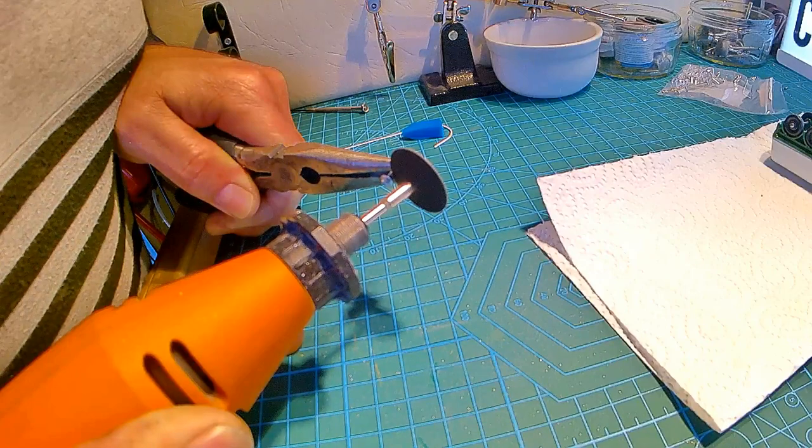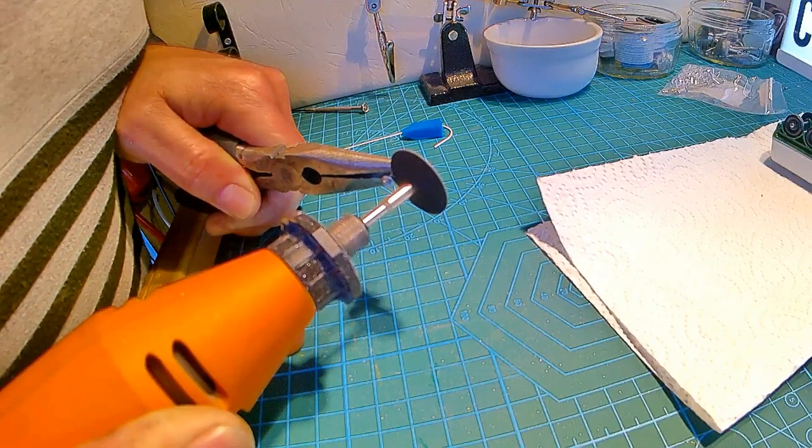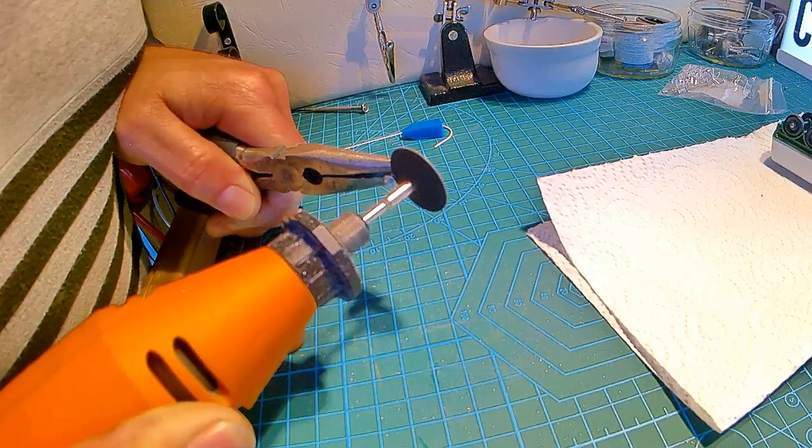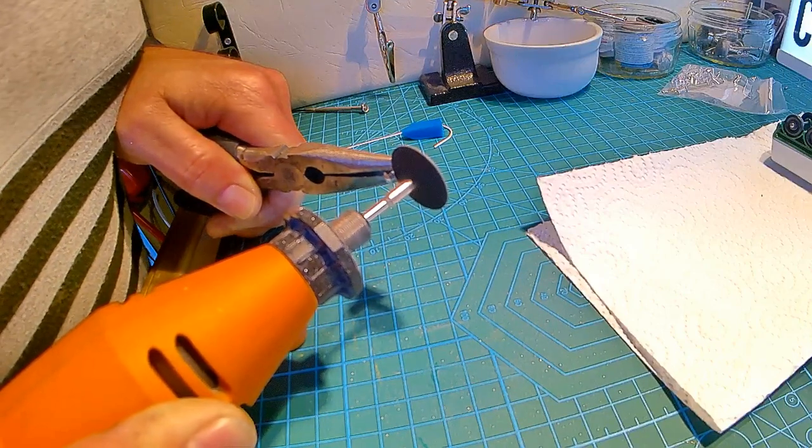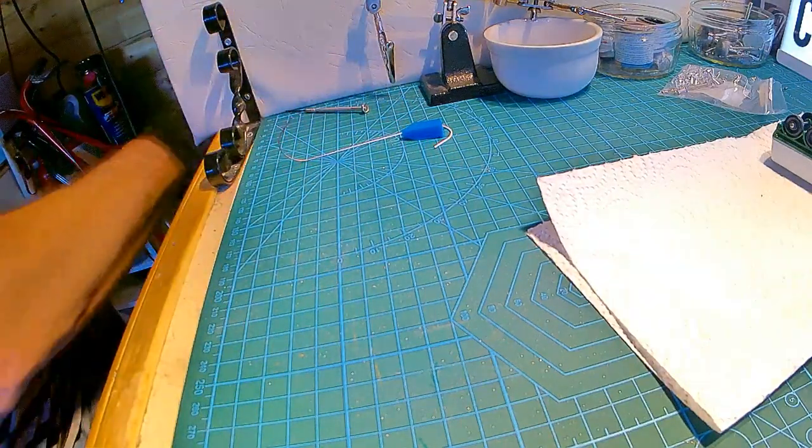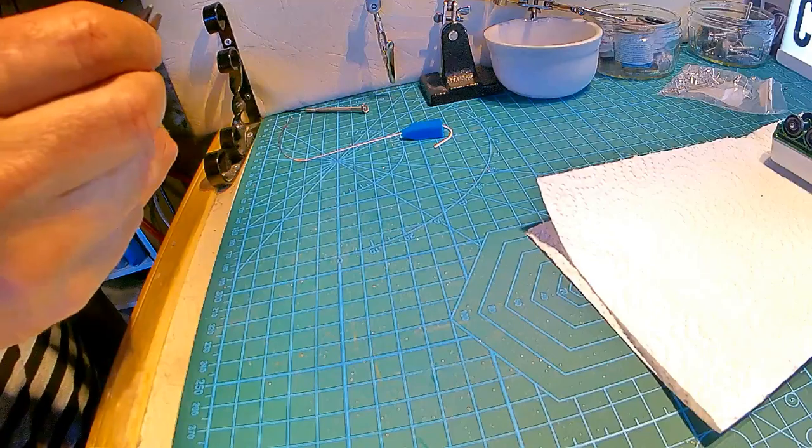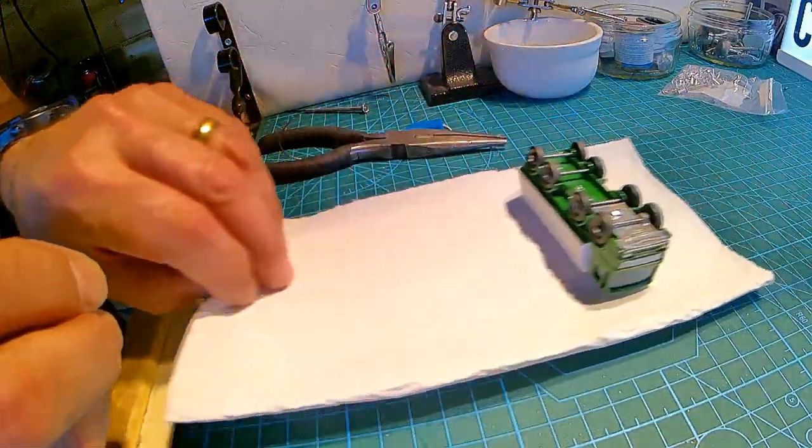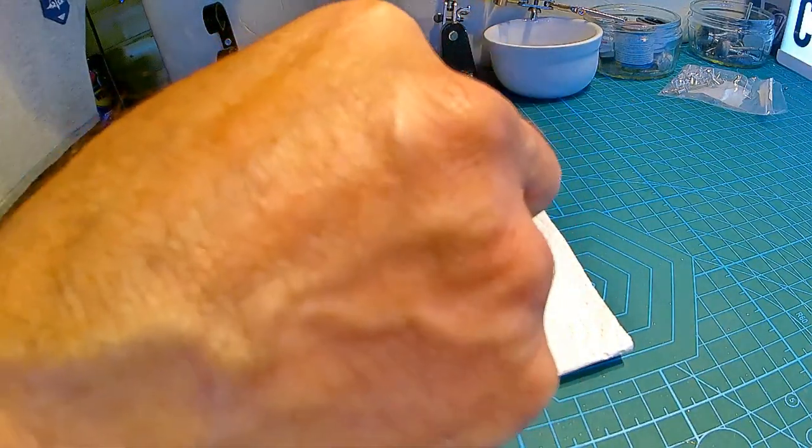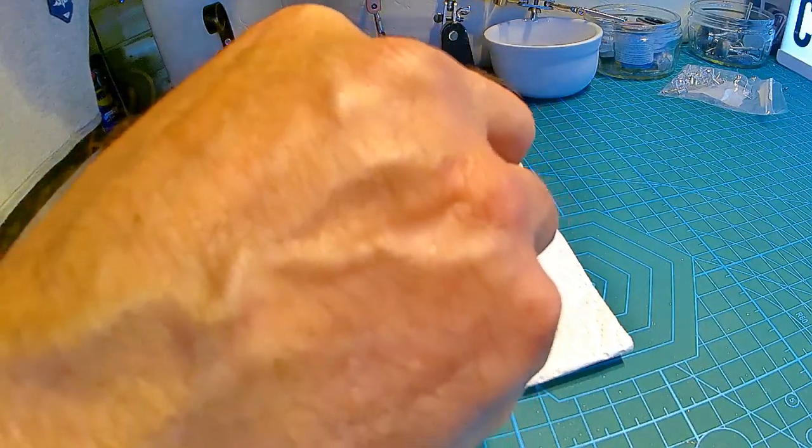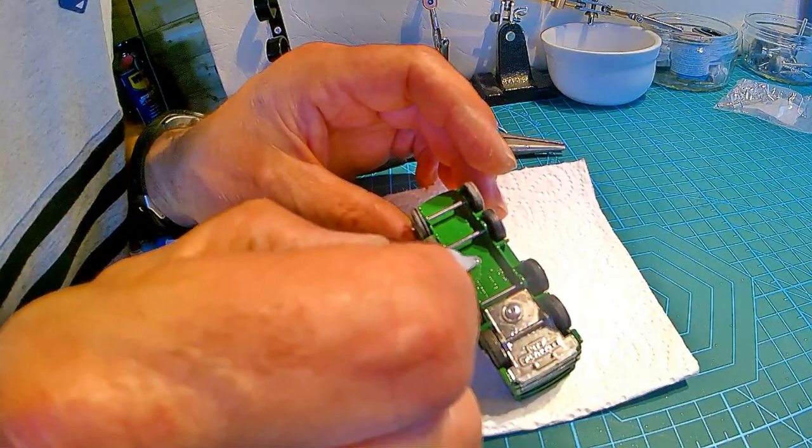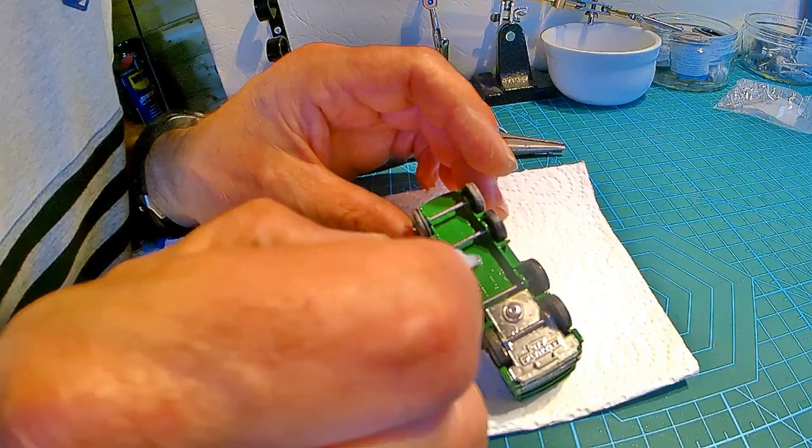And now just cutting down the false fake rivets to size. And once again, I do apologize, my hand's in the way again, but just putting in the front rivet now which holds on the silver base, and now fitting the rivet for the one that holds the tank on.